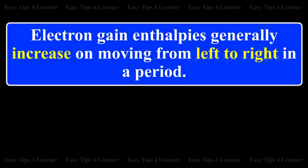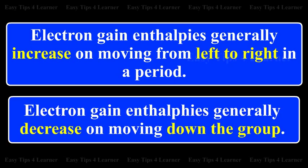Electron gain enthalpies generally increase on moving from left to right in a period. Electron gain enthalpies generally decrease on moving down the group.